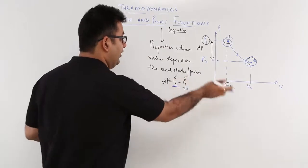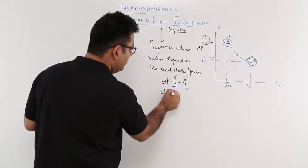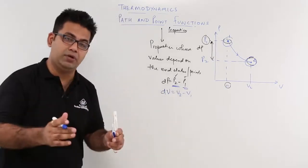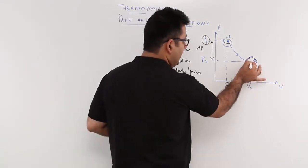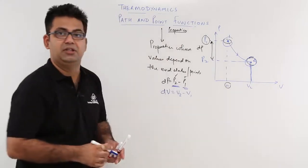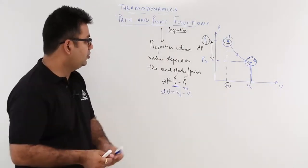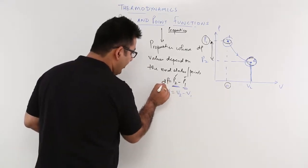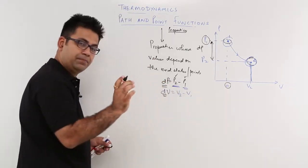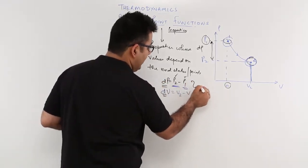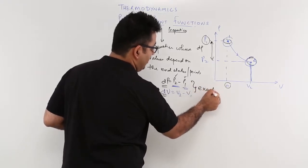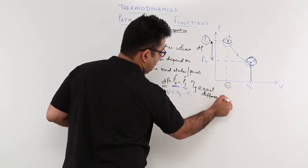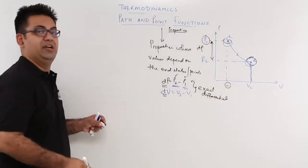Similarly, if you have to find out dV — that is the change in volume — this will be V2 minus V1, because you can find out the volume at each particular point. Because you are able to find out dP and dV, these are also known as exact differentials.